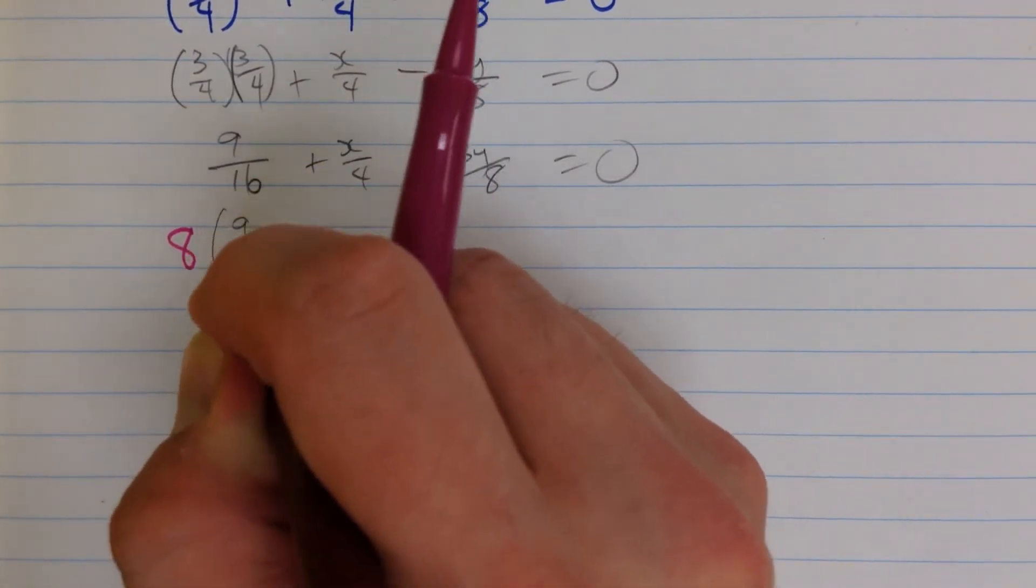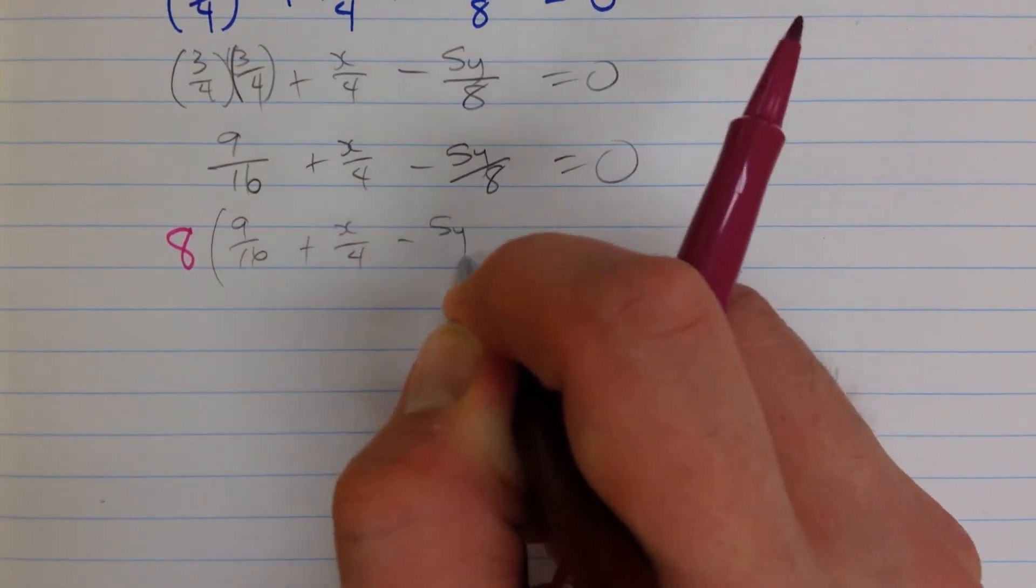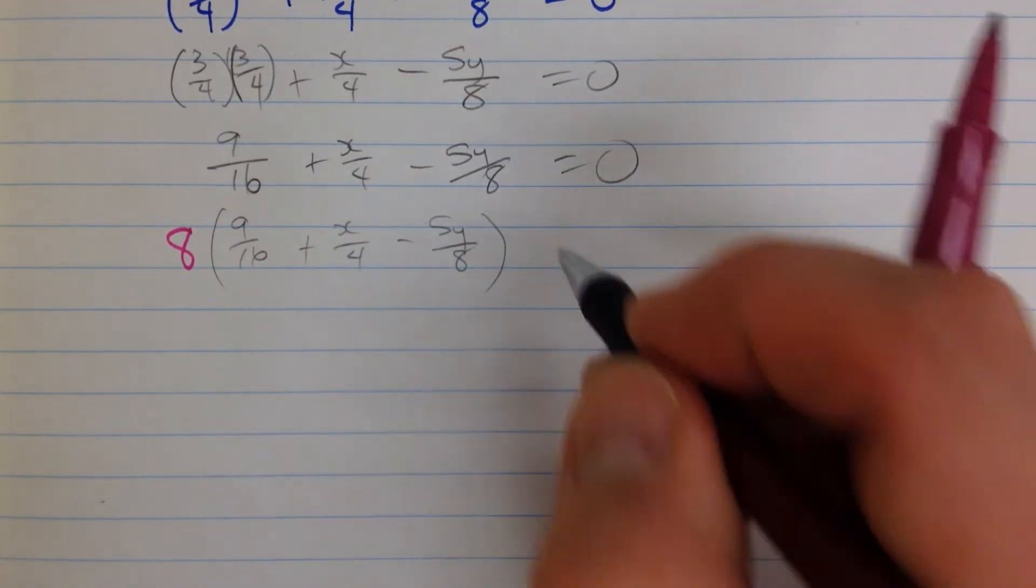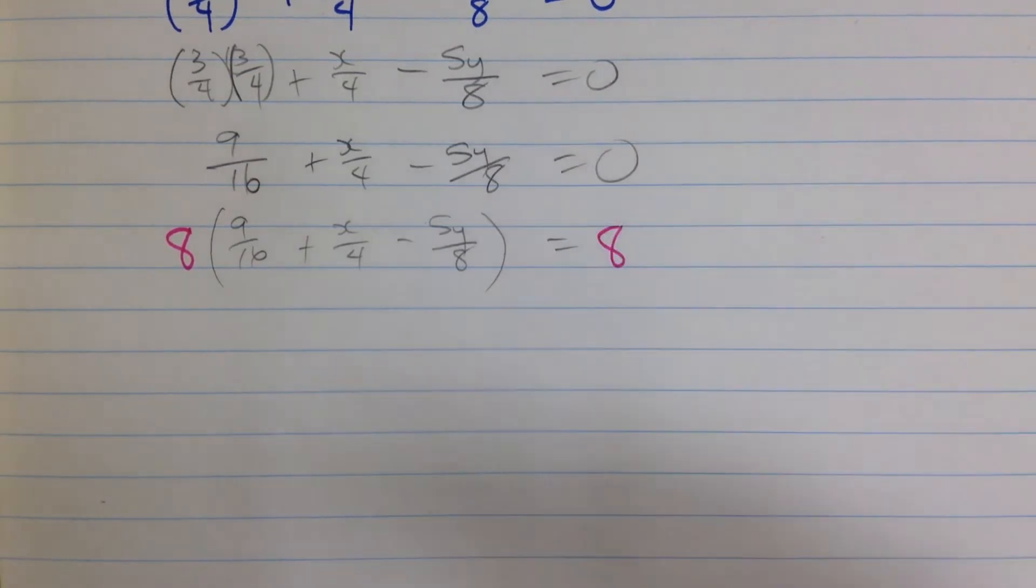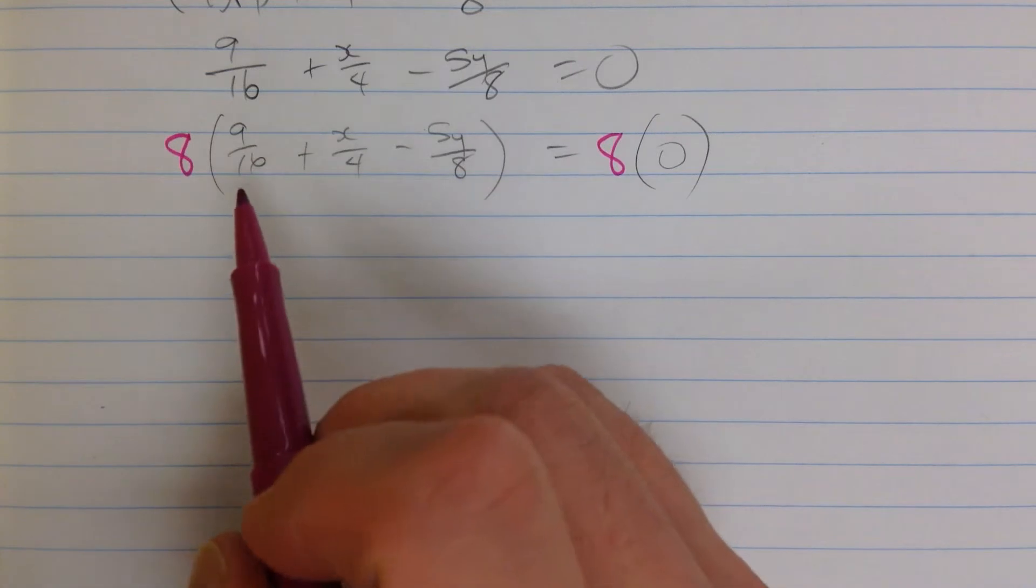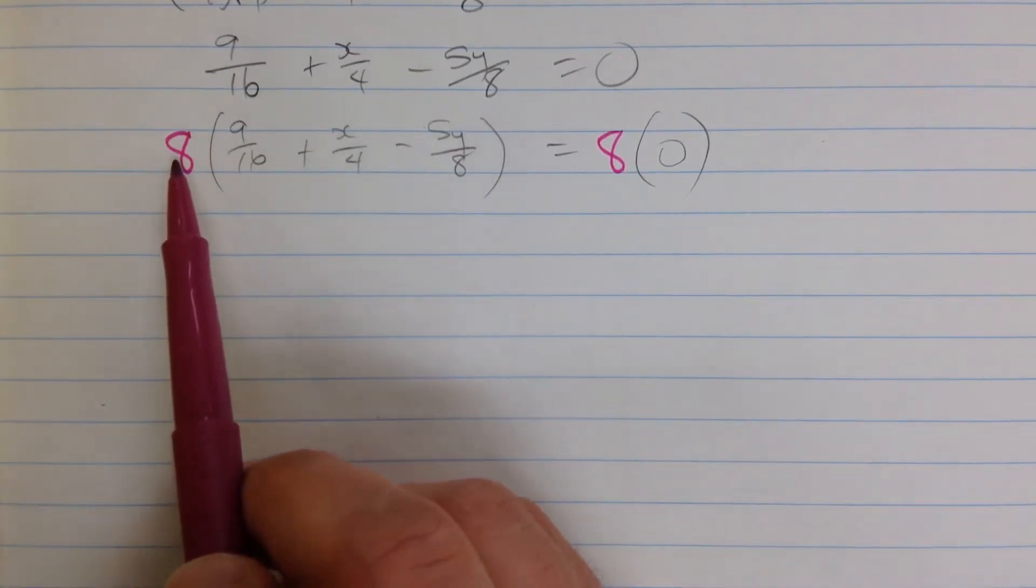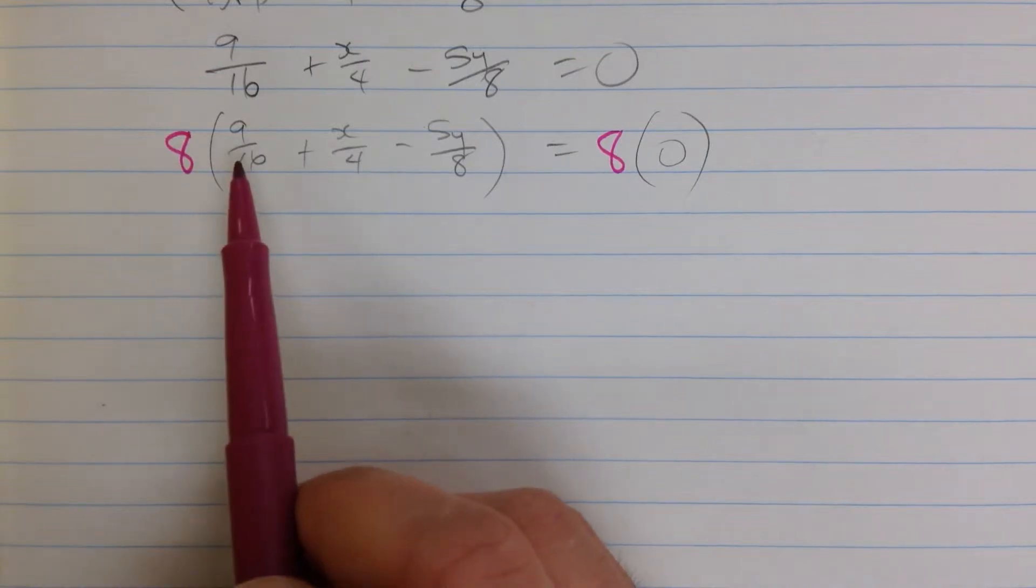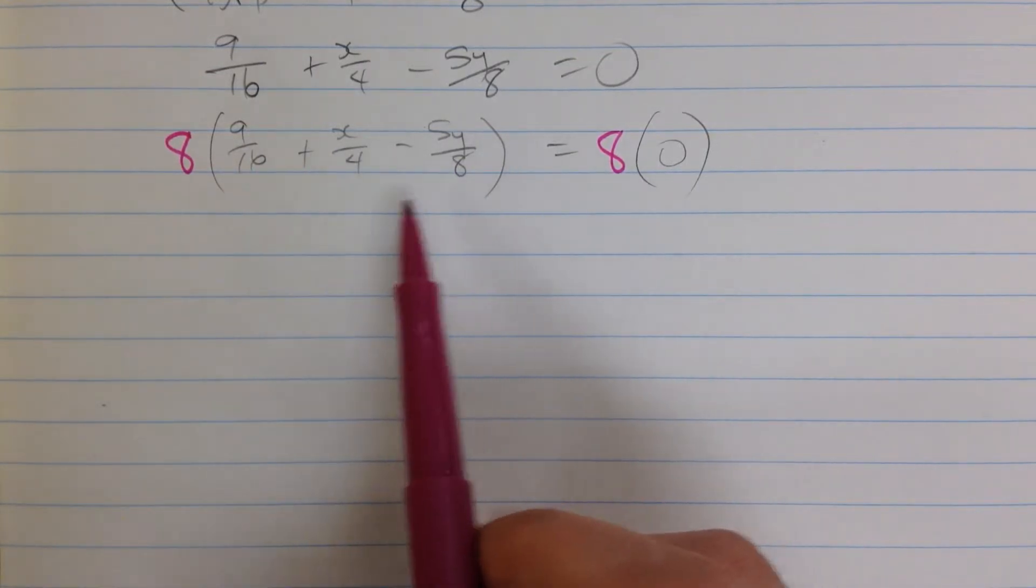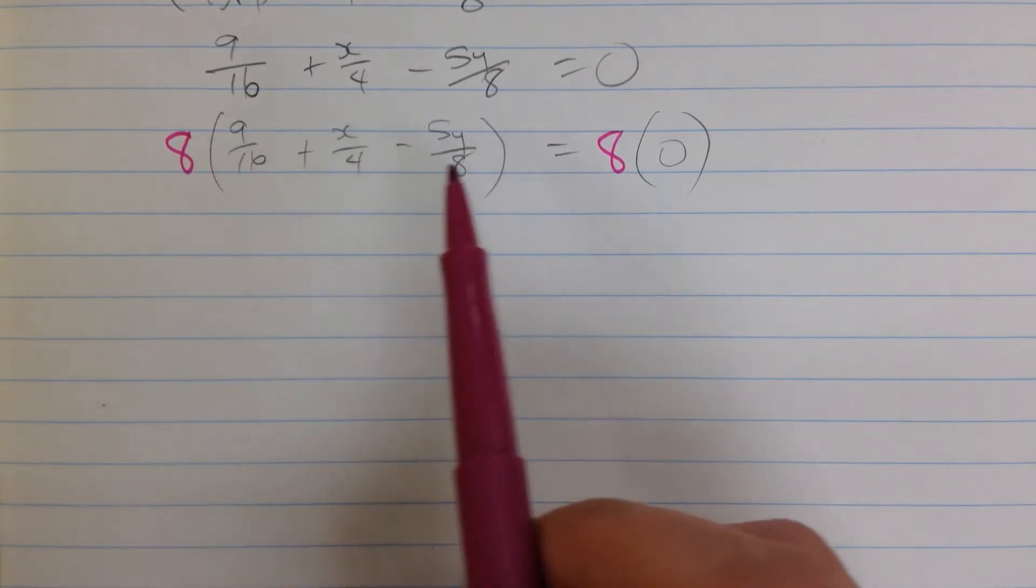8 times all of this equals 8 times all of this, which isn't very much. Now the distributive property of multiplication over addition says that if you multiply a number by a bunch of things you add up or subtract, then that's the same as multiplying it by each one individually.